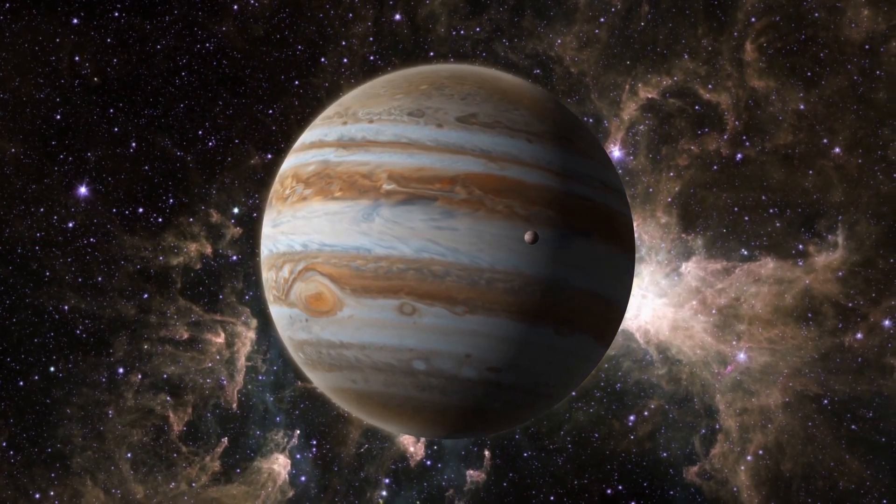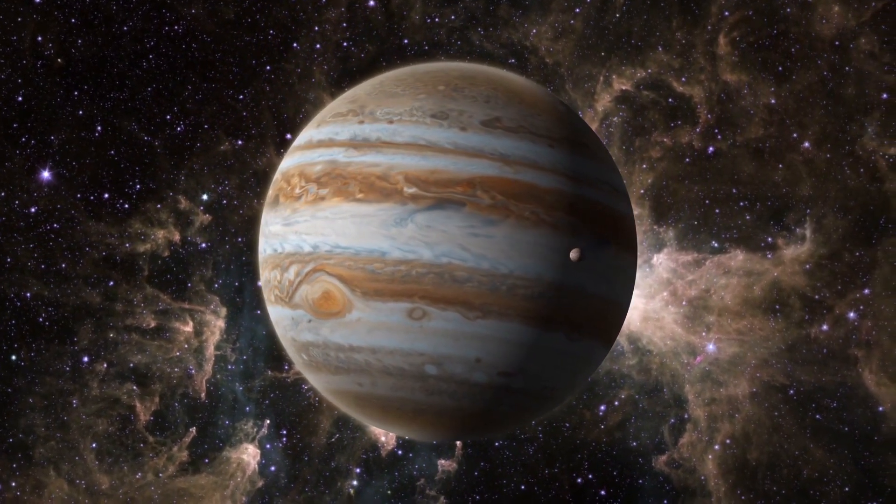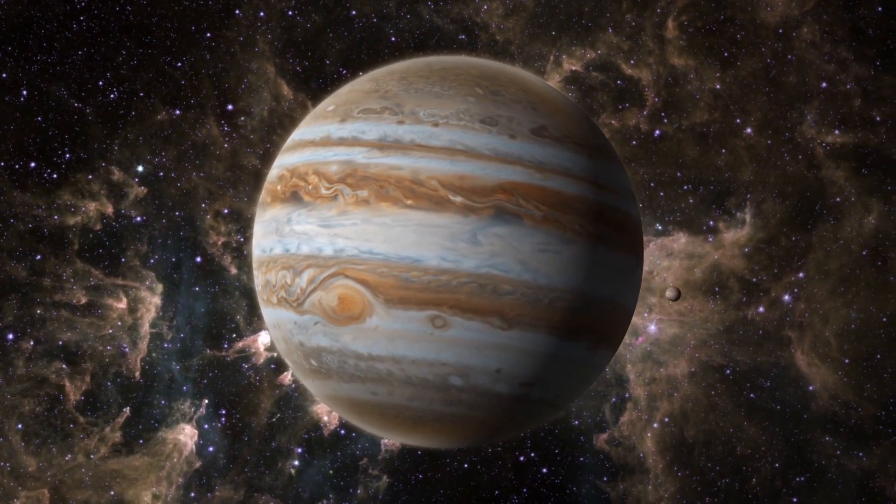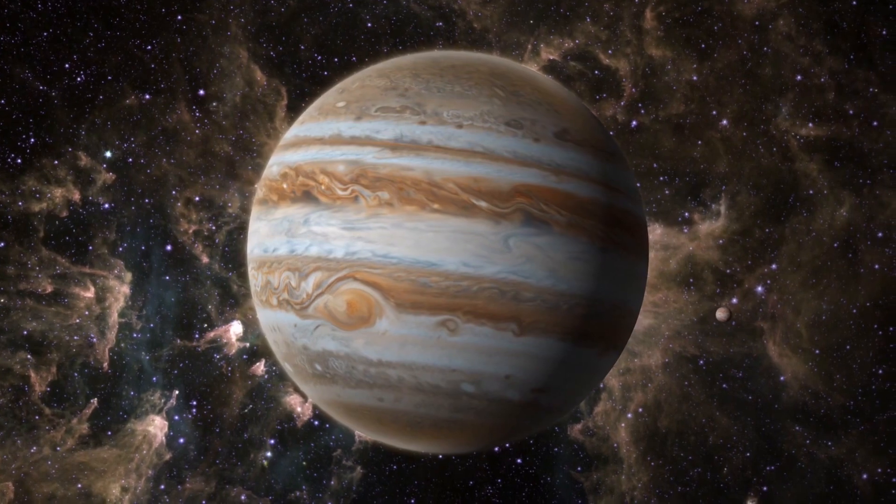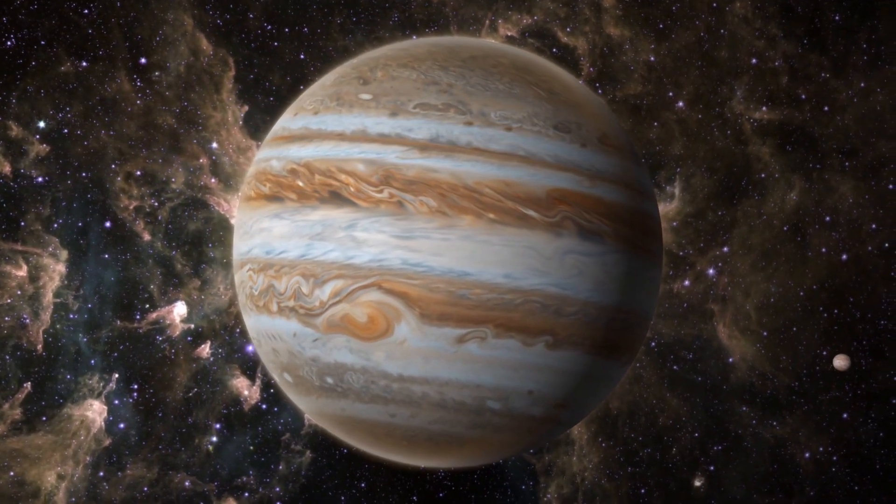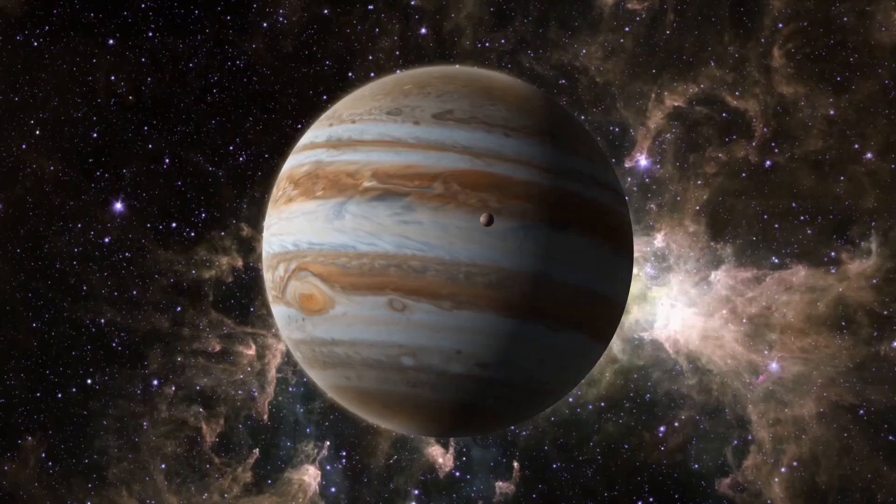Jupiter is a gas giant and the largest planet in our solar system. It has a very fast rotation, completing one rotation in only 9.9 Earth hours. This rapid rotation gives Jupiter its distinct flattened shape.